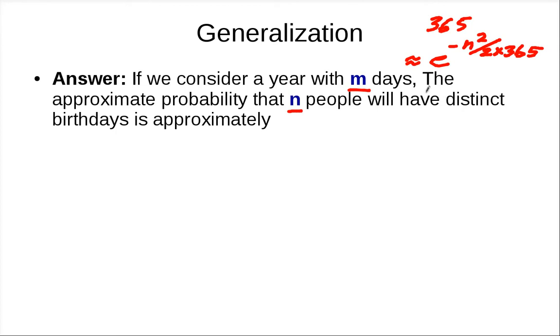If you do the same analysis, then instead of 365, you're going to get M. So the answer is this. With this approximation, you can calculate mainly the number of people or the number of things that is going to be randomly chosen into something so that they will collide with some probability pretty easily with this expression.